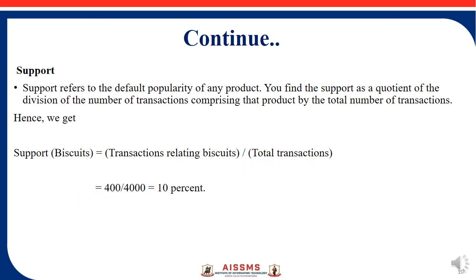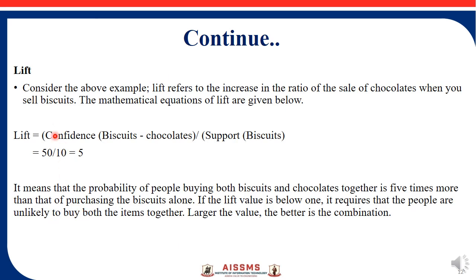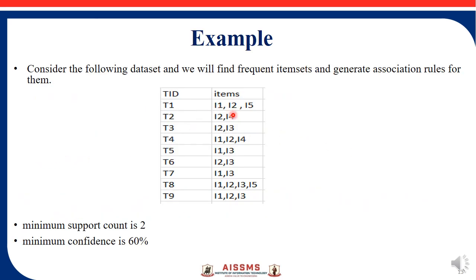Support = 400 divided by 4000 = 10%. Confidence = transactions relating both biscuits and chocolates (200) divided by total biscuit transactions (400) = 50%. Lift = confidence of biscuits → chocolates divided by support of biscuits = 50 divided by 10 = 5.